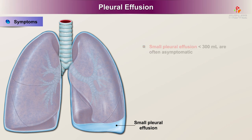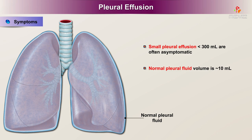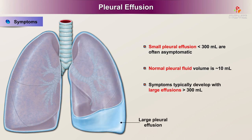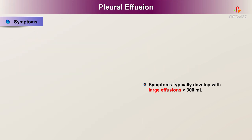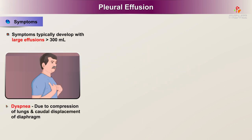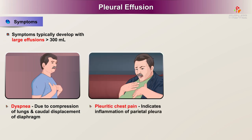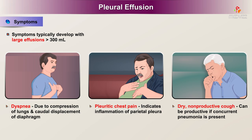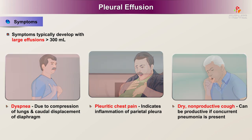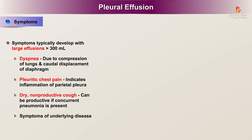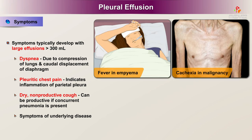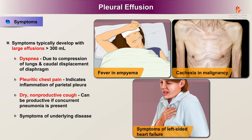Patients with a small pleural effusion, less than 300 ml, are often asymptomatic, as the normal pleural fluid volume is approximately 10 ml. Symptoms typically only develop with large, more than 300 ml, effusions. Characteristic symptoms include dyspnea due to compression of the lungs and caudal displacement of the diaphragm, pleuritic chest pain indicating inflammation of the parietal pleura, and dry non-productive cough (which can be productive if concurrent pneumonia is present), as well as symptoms of the underlying disease such as fever in empyema, cachexia in malignancy, or symptoms of left-sided heart failure.